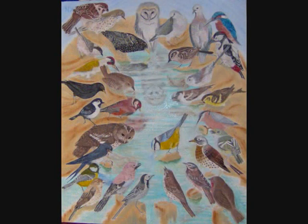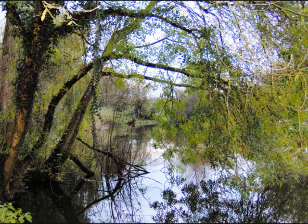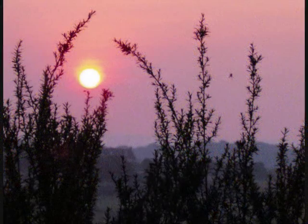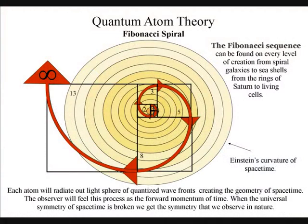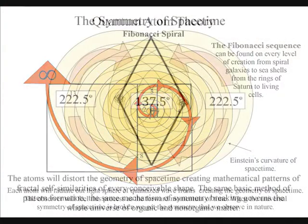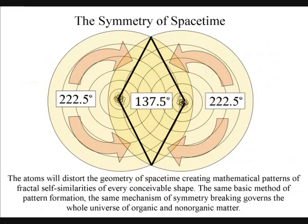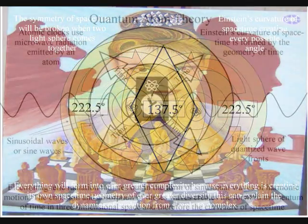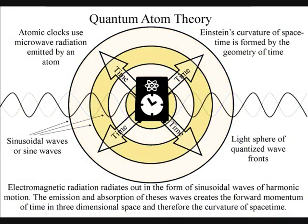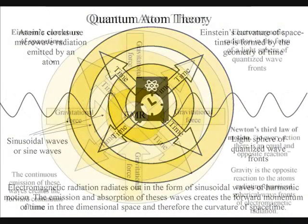Everywhere we look, we can see within the diversity of nature the same common symmetry, the same guiding force. This can only be because of an underlying symmetry and a continuous process of symmetry breaking. In quantum atom theory, this symmetry is the symmetry of time continuum that forms the geometry of space-time.